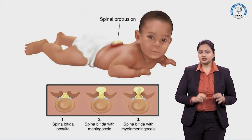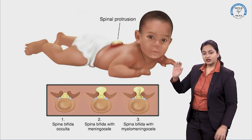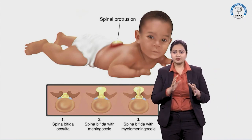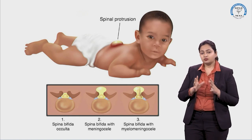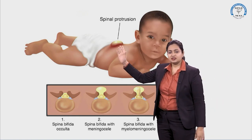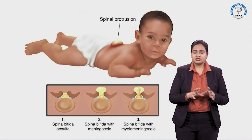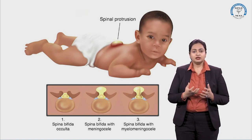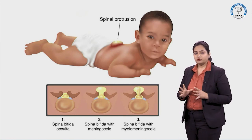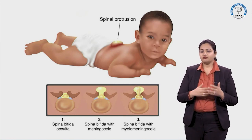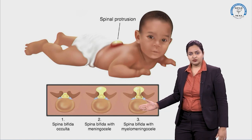If there is a defect in the closure of the caudal neuropore, it leads to a condition known as spina bifida. Spina bifida is mostly towards the lumbar aspect, and it typically presents as a sac-like swelling in the lumbar area filled with cerebrospinal fluid or material from the spinal cord. Spina bifida can be of various types: spina bifida occulta, meningocele, or myelomeningocele.